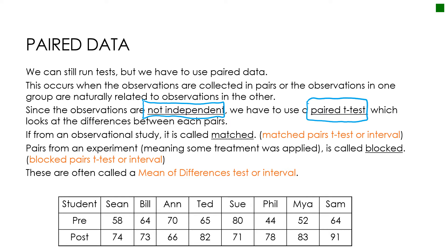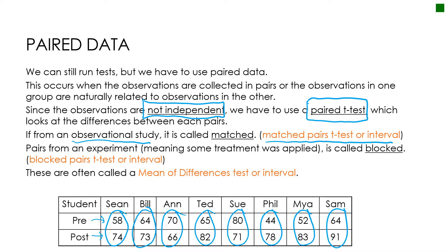A paired t-test looks at differences — pairwise differences — the differences for each person. There are two kinds of paired tests, but it's actually the same test; we just call it something different depending on whether it was an observational study or an experiment. If you're observing to see if there's a difference, it's called a matched pairs t-test. It's called a blocked pairs t-test if you have an experiment, because some treatment was applied between the pre and post results.